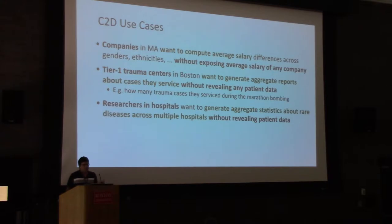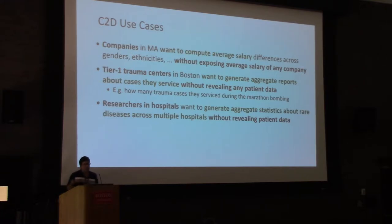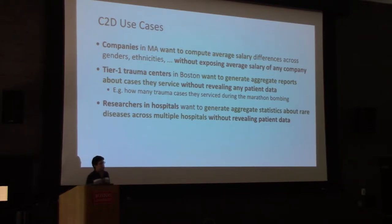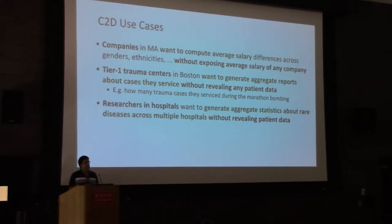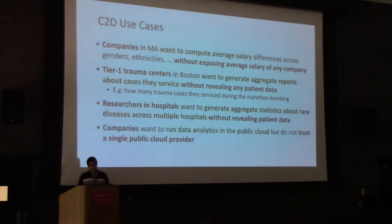Another use case in the Boston region: researchers in hospitals want to generate aggregate statistics about rare diseases that they treat across multiple hospitals. They have so few cases of these rare diseases that they cannot do the generalizations they want to do. They want more examples across different hospitals, but because of regulations like HIPAA, they cannot share this data with each other — yet they want to do statistical analysis without revealing any patient data.